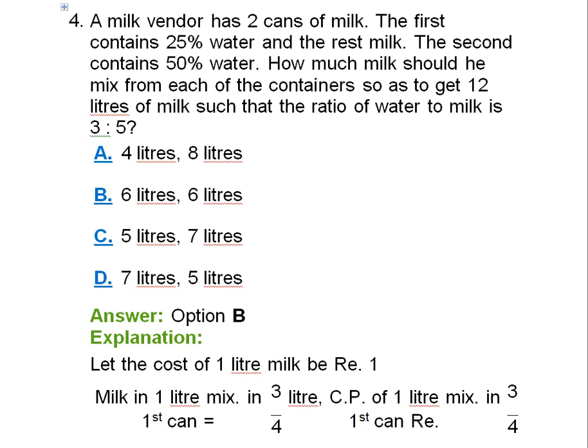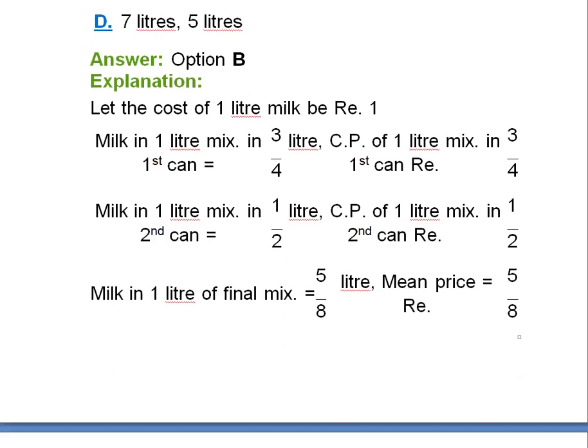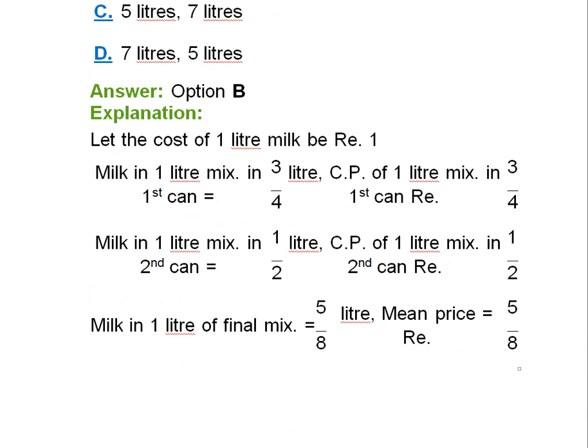We consider let the cost of one liter milk be Re. 1. Now milk in one liter mix in first can is 3/4 liter, and CP of one liter mix in first can is Rs. 3/4.